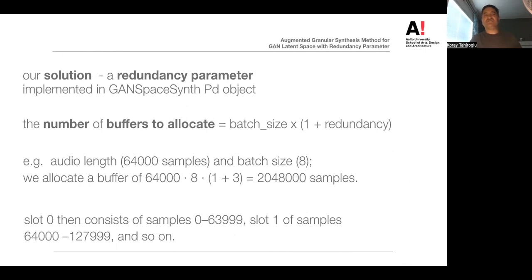Our solution was to use more buffers so that GANSpaceSynth can always write synthesized audio into a buffer that is not being played back. To do that, we introduced a redundancy parameter as a new implementation to our GANSpaceSynth PD object. Our solution to apply redundancy parameter for reordering buffers and adding additional buffers to avoid playback interruption is all about allocating memory for an audio sample just for temporary storage. So if we are sure that the buffer doesn't overlap with the sound we are synthesizing, we can use that buffer slot.